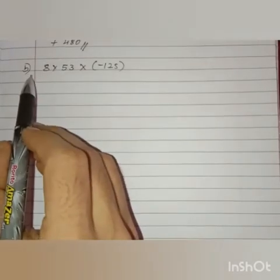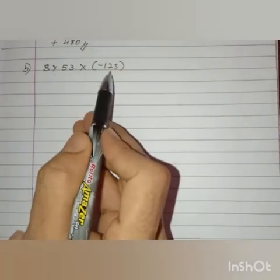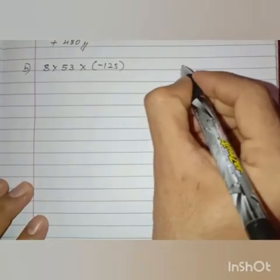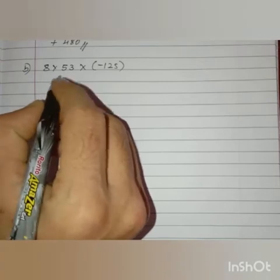Next question number b, 8 into 53 into minus 125. So, this is in the form of which property that is associative property, right? So, what is associative property of multiplication?